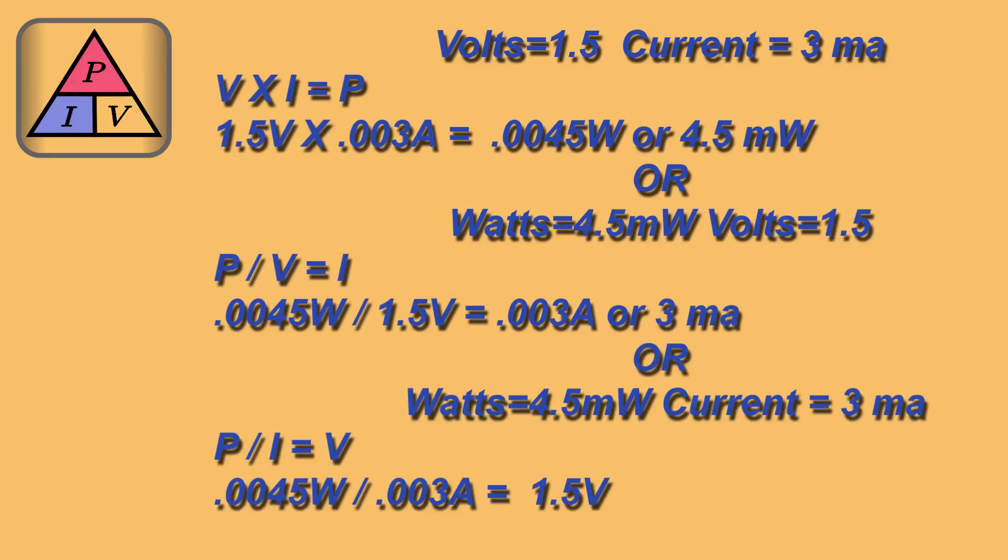Or for current, we would do power over current, which equals voltage. In our case, 0.0045 watts divided by 0.003 amps equals 1.5 volts.